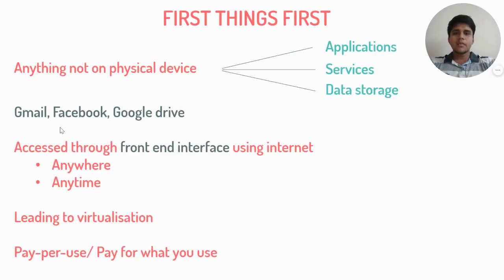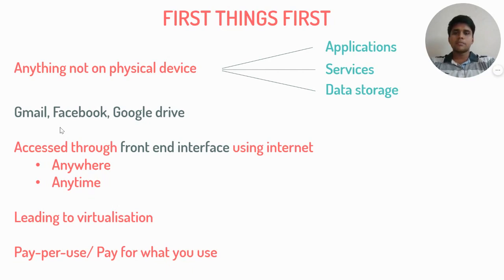In traditional computing, the application hosting and the data storage happen on a physical device. When it comes to cloud computing, it is the same set of tasks and activities that are being performed, except they happen on a virtualized platform called the cloud. Our daily drivers such as Gmail and Facebook are really good examples for this. Let us look into Gmail and understand the concept better.